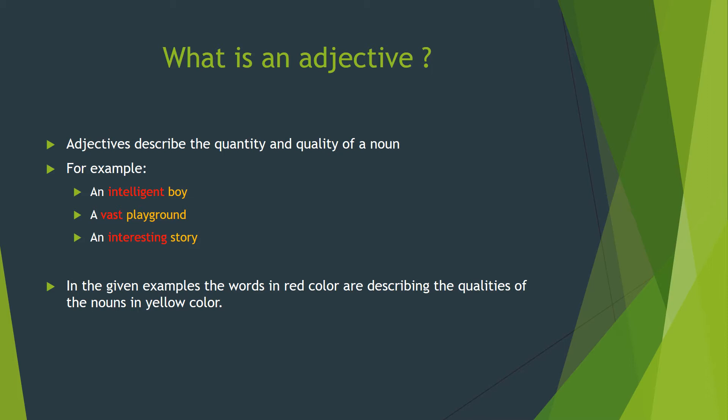In the given examples, you may see that the words in red color are describing the qualities of the nouns, which are written in yellow color. So the words in red color are adjectives and the words in yellow color are nouns.